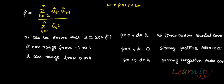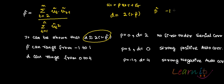It can be shown that D ≈ 2(1 - ρ̂). Since ρ̂ ranges from -1 to 1, D ranges from 0 to 4. When ρ̂ = 0 and D = 2, there is no first order serial correlation. When ρ̂ = 1 and D = 0, there is strong positive autocorrelation. When ρ̂ = -1 and D = 4, there is strong negative autocorrelation.